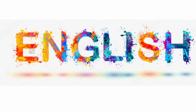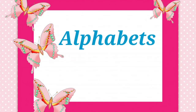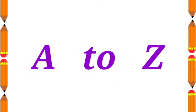Hi students. In English, today we are going to learn alphabets. There are 26 alphabets in English. How many alphabets are there? There are 26 alphabets, from A to Z. Let's learn.